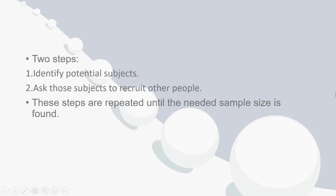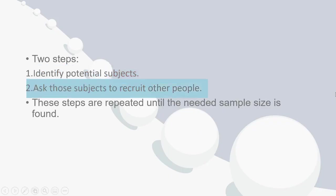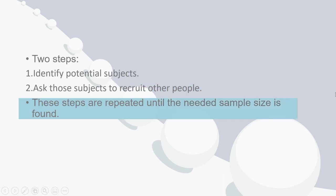Snowball sampling consists of two steps. First, identify potential subjects in the population — often you'll only find one or two people initially. Then ask those people to recruit others, and ask others to recruit some more. Participants should be made aware they don't have to provide any other names. These steps are repeated until you get your required sample size.